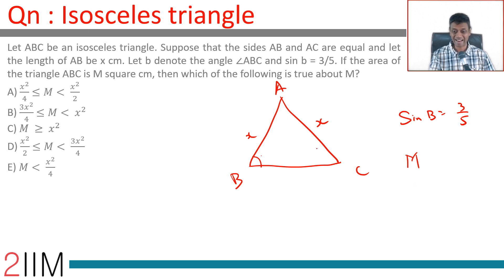So think about it. M is the area. If you call this angle as A, area is half X square sin A. Brilliant. This is B. This is also B. These two angles are equal. Sin B is 3 by 5.